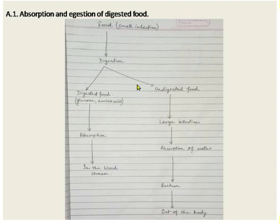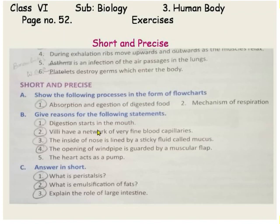This process is called ejection. So this is the flowchart of absorption and ejection of digested food. Now, let us come to the next question — the next flowchart.